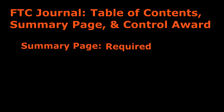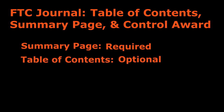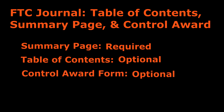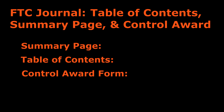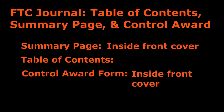The summary page is very important because your journal will be immediately disqualified without it. The table of contents is not required, but it is a good idea to have one in your journal. The control award form is only required if you want to apply for the control award. All three of these go in front of the Engineering Notebook when you submit your notebook at competition. The control award and summary page must go on the inside of the front cover of your binder, and the table of contents should go in the binder rings.